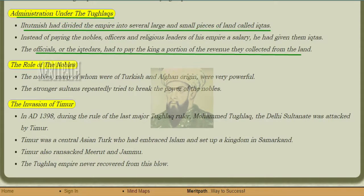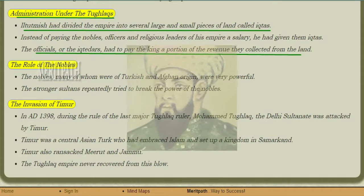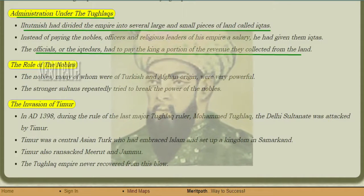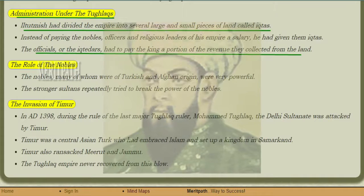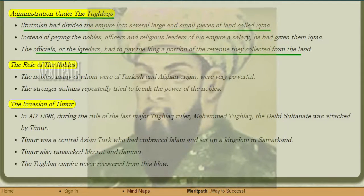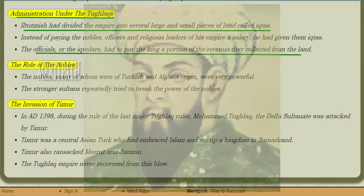How was the administration under the Tughlaqs? Iltutmish divided the empire into large and small pieces of land known as Iktas. Officers and religious people were not paid a salary; instead, they were given Iktas. These officials, called Iktadars, had to pay the king a portion of the revenue they collected from the land.